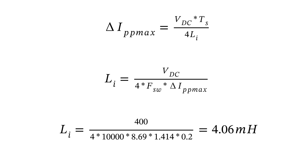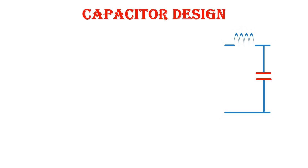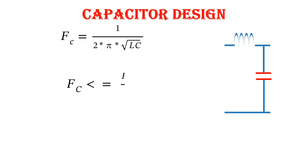Substituting all values from our specifications, we get an inductance of 4.06 millihenry. Now we'll look at the design of the capacitor. The inductor and capacitor form a low pass filter, and the cutoff frequency of this filter is given by f_c = 1 / (2π√(LC)).